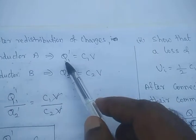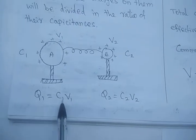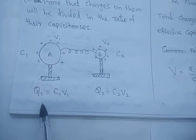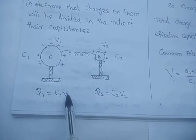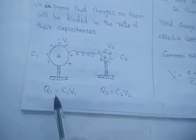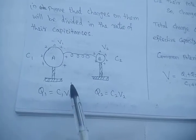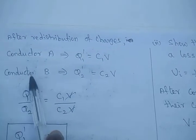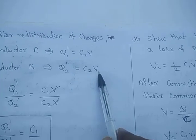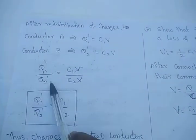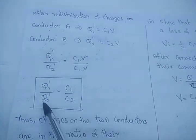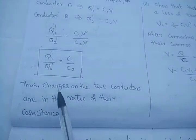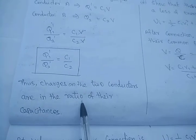Listen carefully. In the previous expression, q1 = C1V1 and q2 = C2V2 with their individual potentials. Now after redistribution, q1′ = C1V and q2′ = C2V where V is the common potential. Dividing q1′ by q2′, the common potential V cancels. So q1′/q2′ = C1/C2. Thus we have proved that the charges on the two conductors are in the ratio of their capacitances.